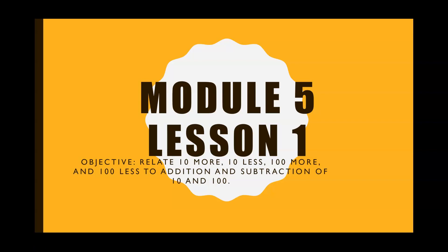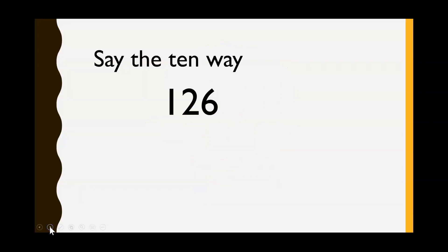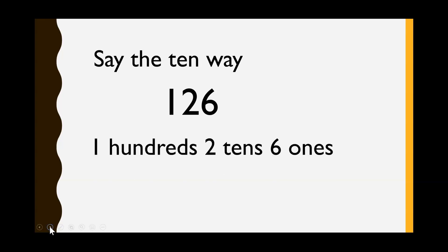Hello second grade, this is module 5 lesson 1. We're going to say the tens way. So for example, for 126, to say the tens way we would say 100, two tens, six ones.